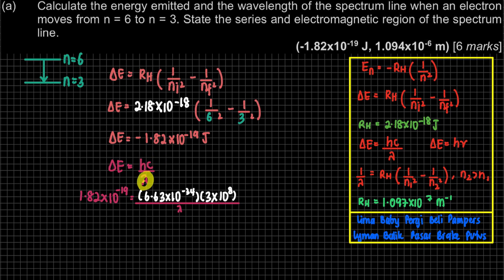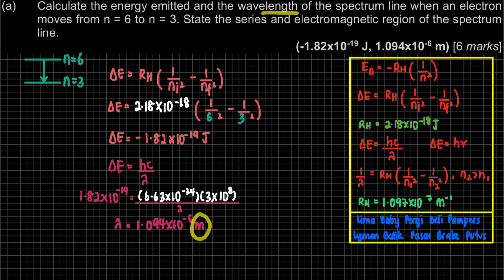Wavelength, length — the value will always be positive. That's why we don't put negative here. So you will get your wavelength to be 1.094×10⁻⁶ meters. It's a length measurement, so the unit is meters.